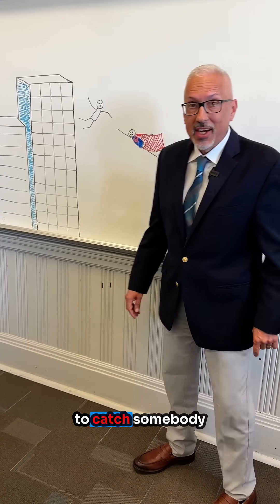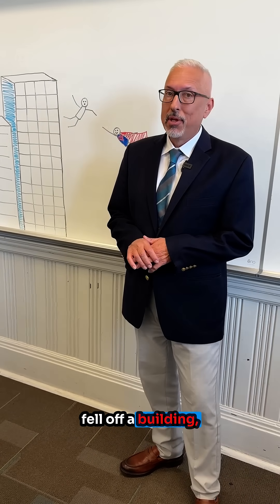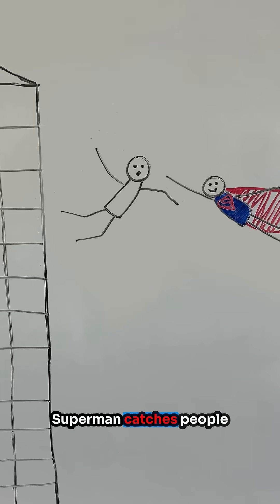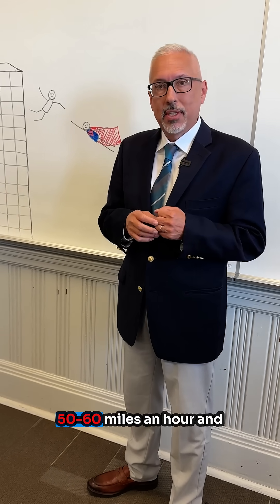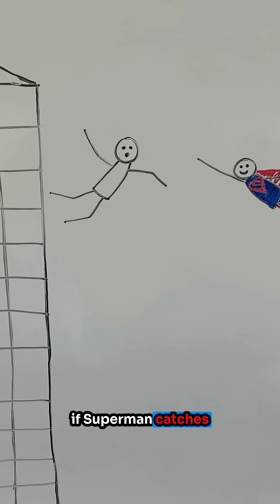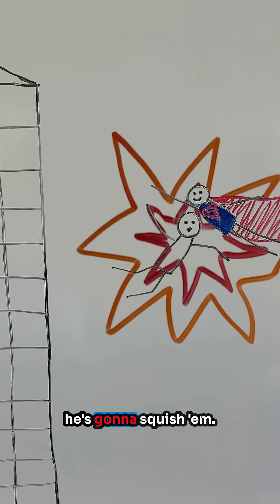If Superman tried to catch somebody who accidentally fell off a building, how would it go? Superman catches people really fast when you see him in the movies. We'll do the math, but they could be going like 50, 60 miles an hour. And if Superman catches them so fast like that, he's going to squish them.